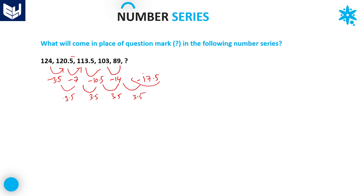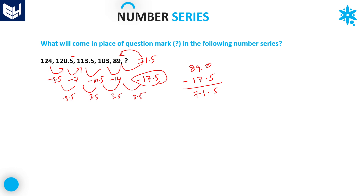So the next gap should be minus 17.5. If you subtract 17.5 from 89 you get 71.5. You can verify: 71.5 plus 17.5 equals 89. So in place of the question mark the answer is 71.5. I hope you enjoyed the class — thank you very much for watching.